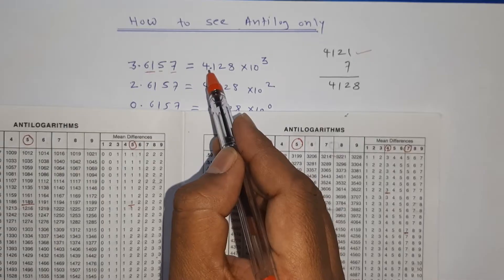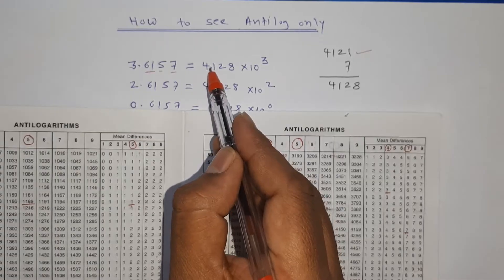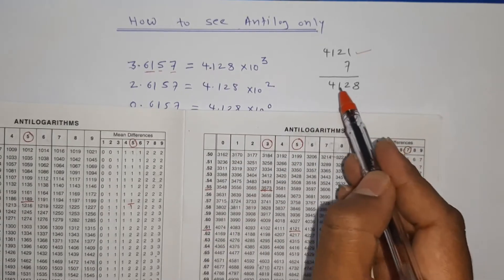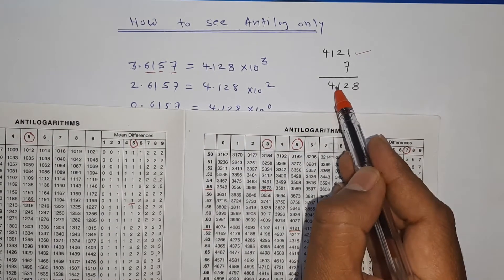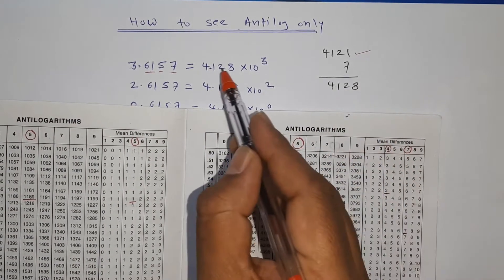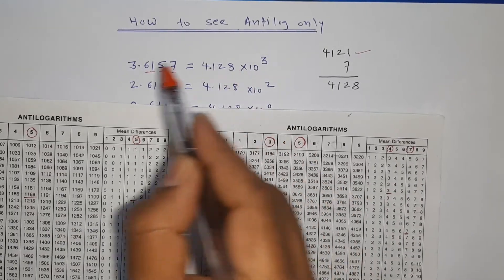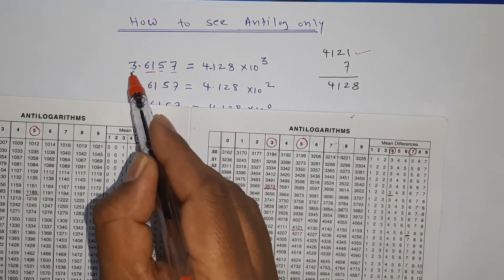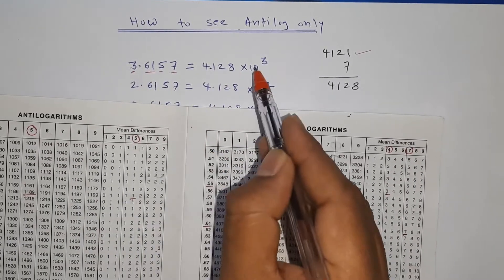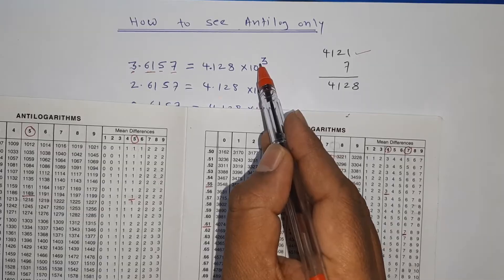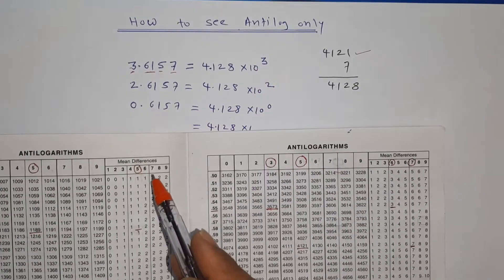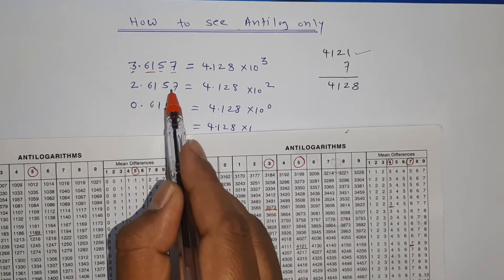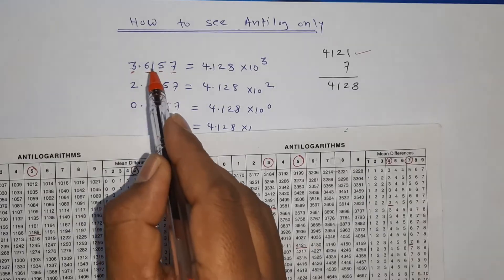To place the decimal point, always put the decimal after one digit, then multiply by 10 raised to the characteristic. In this case the characteristic is 3, so the answer is 4.128 × 10³.